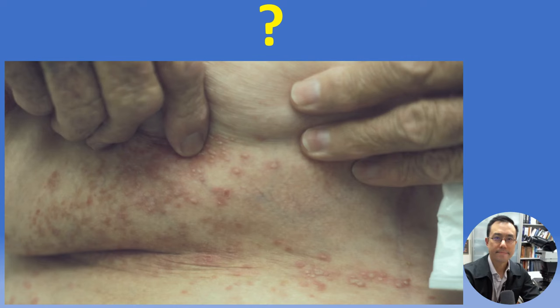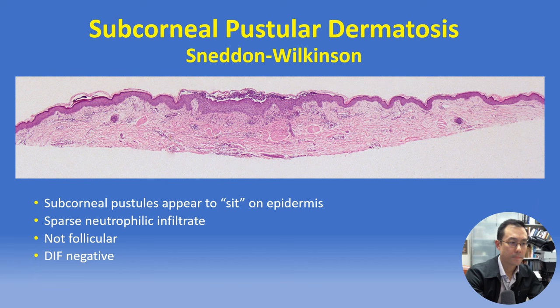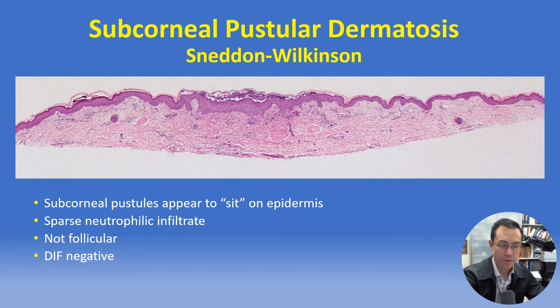Now a clinical quiz: subcorneal pustular dermatosis, also known as Sneddon-Wilkinson disease, originally described in 1956, is characterized by predominantly sub-corneal pustules that appear to sit on top of the epidermis. The infiltrate is usually sparse and is not associated with hair follicles.